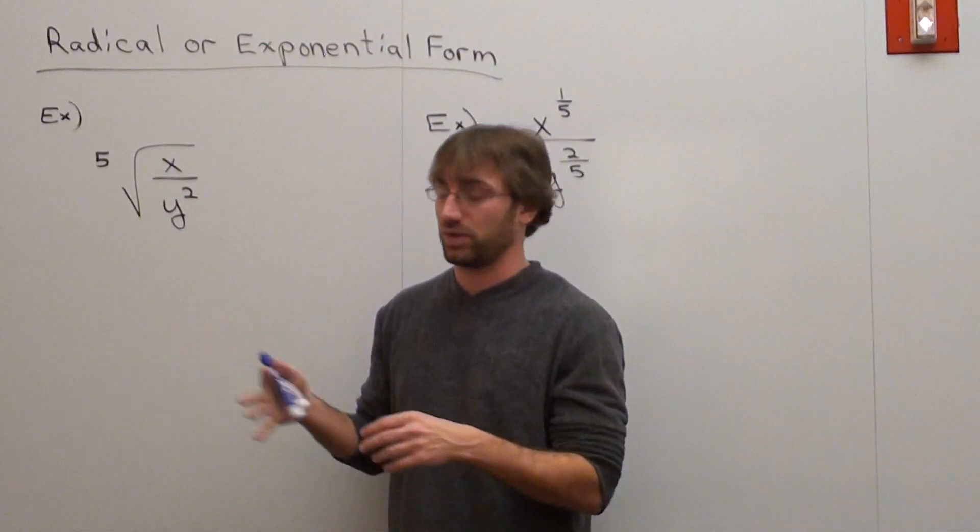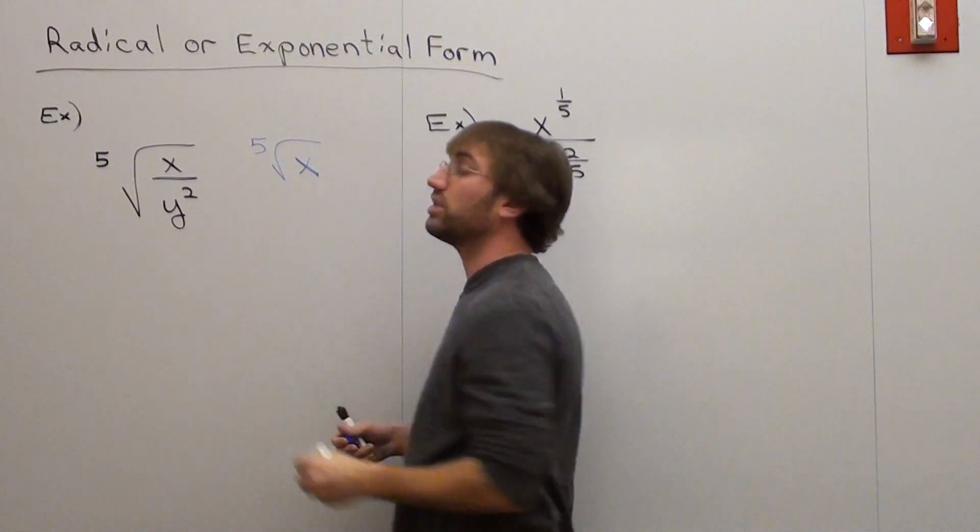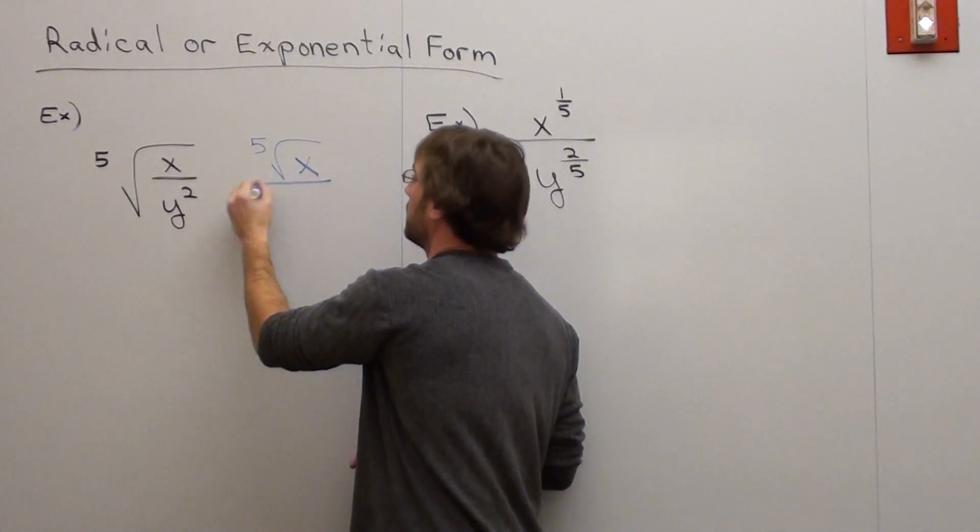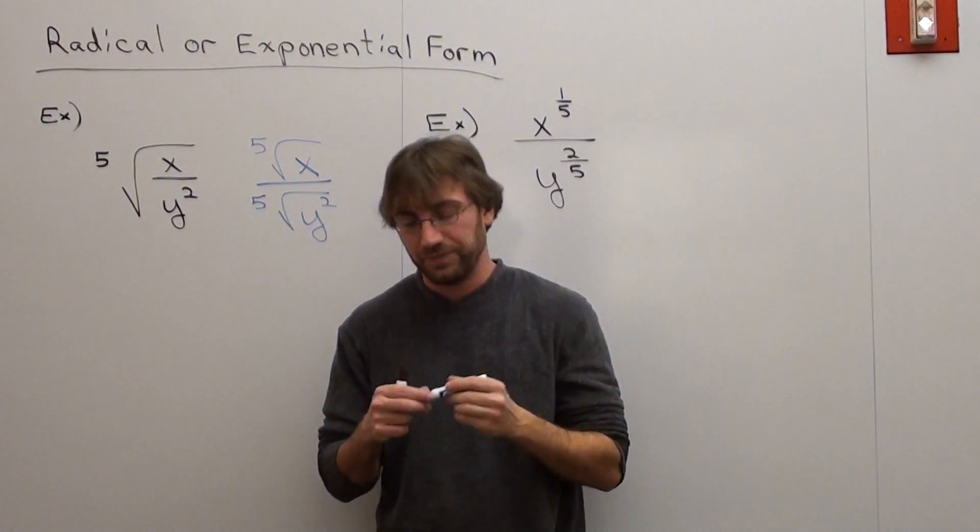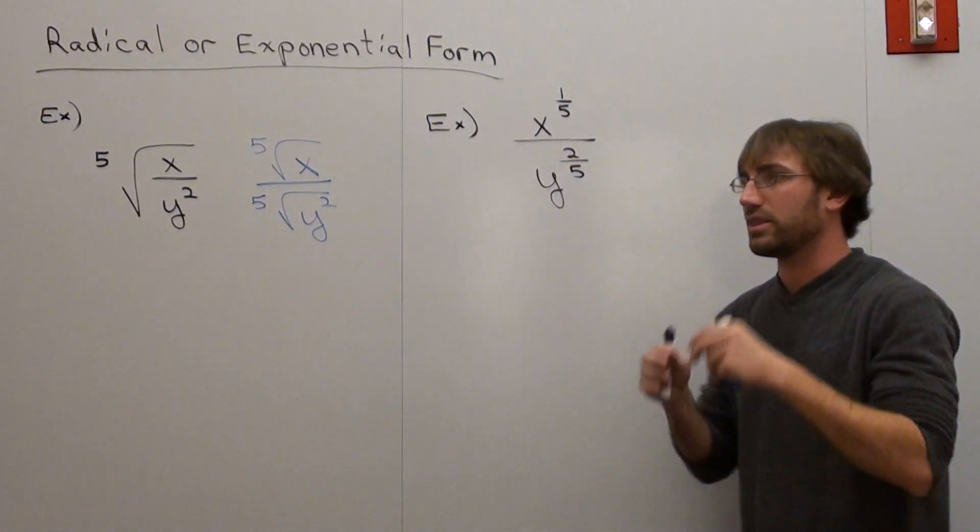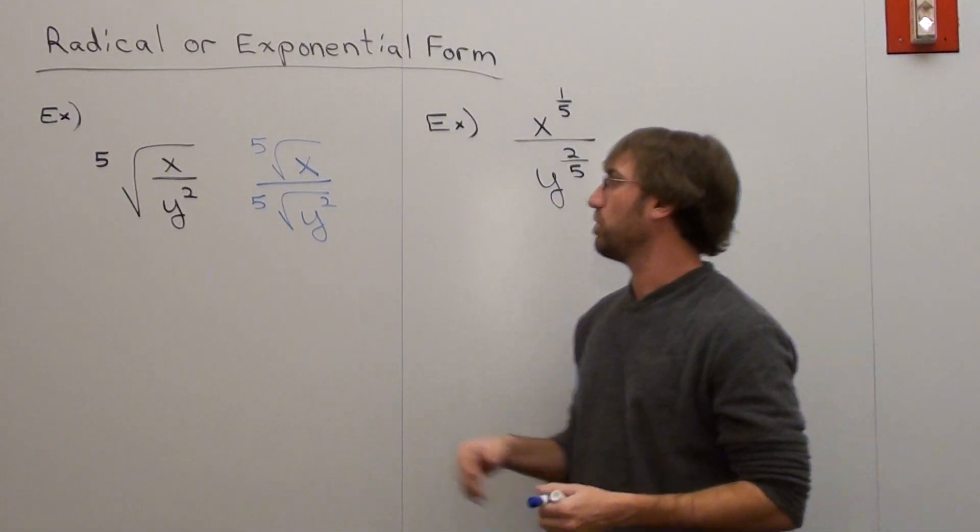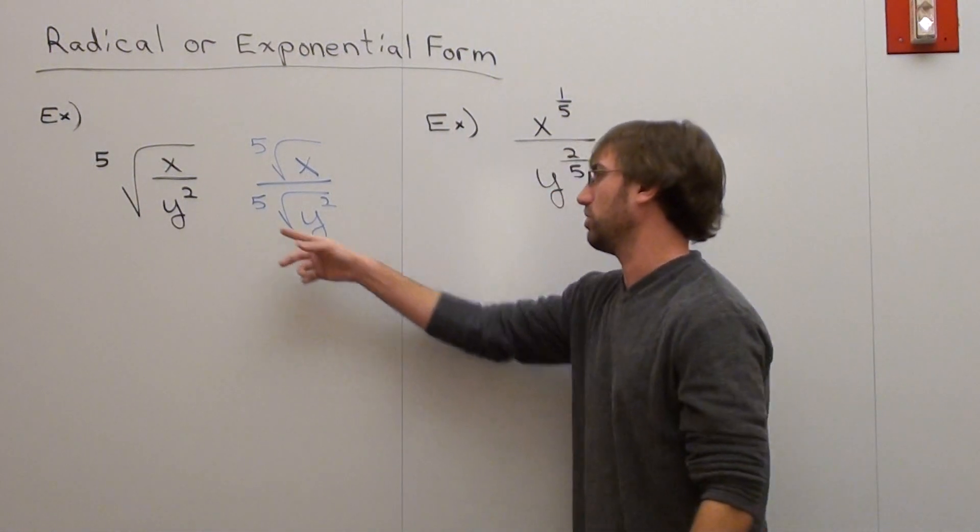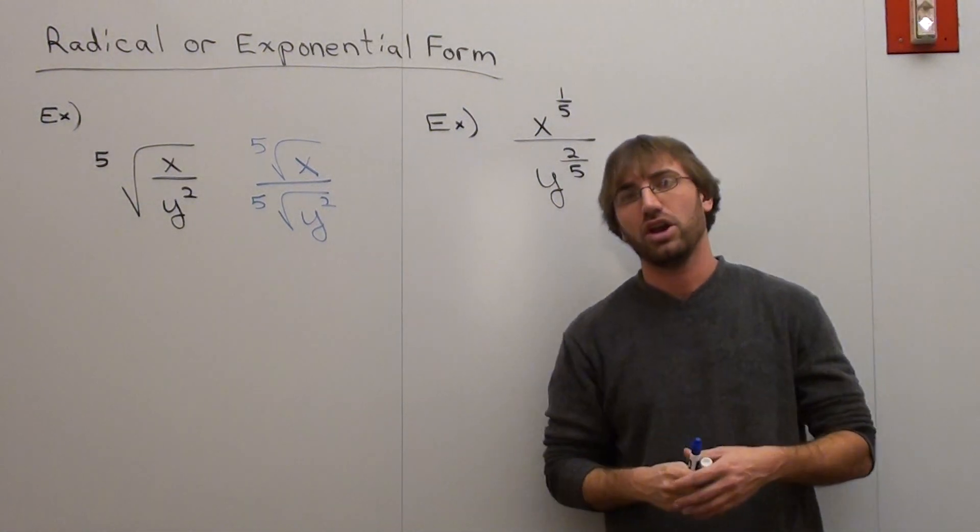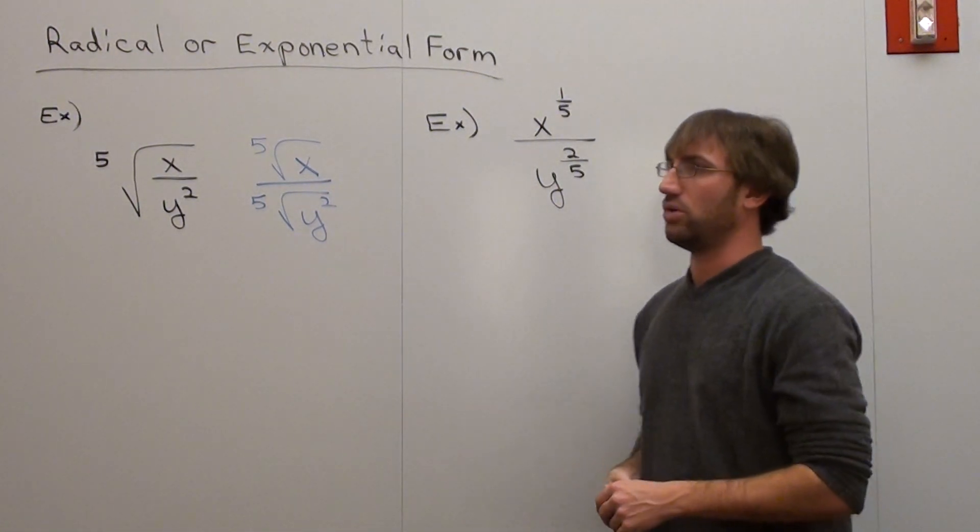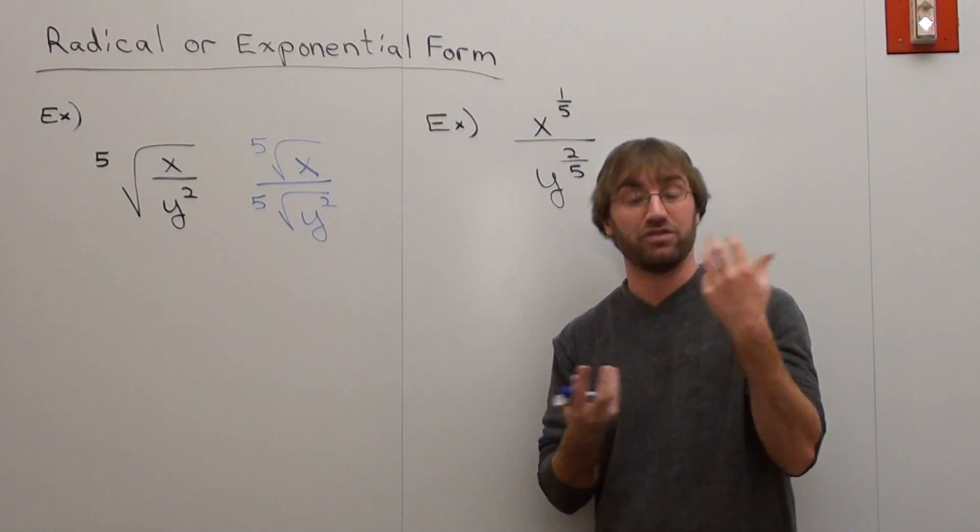Let me go ahead and rewrite this one really quickly. This is the fifth root of x over fifth root of y squared. Now, no matter which way you write it, the problem is that your denominator is not rationalized, i.e., that you have a fractional exponent in your denominator. You can look at it as fifth root of y squared, or you can look at it as y to the two-fifths. It doesn't matter. Your y has to be whole. Y to the second, y to the first, y to the third, y to the fourth. It can't be a fraction.